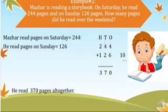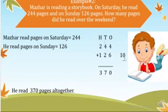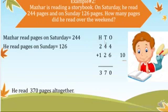So we write the statement first. Mother read pages on Saturday: 244. She read pages on Sunday: 126. Now we write here in the place value chart these 2 numbers carefully: 244 plus 126. So 2 we write here in the 100th column, 4 we write in the 10th column, and 4 again we write here in the 1's column. Now we start adding the numbers in the 1's column. There are 2 digits, 4 plus 6, and their sum is 10. So we write 0 here in the 1's column and 1 we take as a carry and put here in the 10th column.